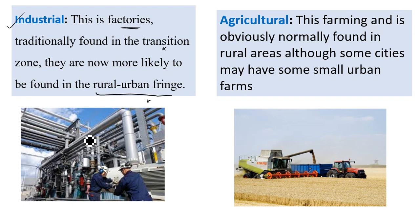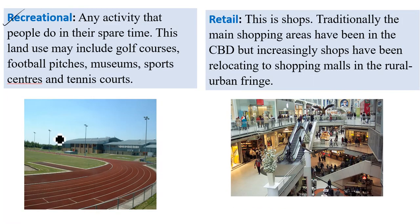Another function is agriculture — farming — which is normally found in rural areas, although some cities may have small urban farms. Another function is recreational activity — any activity that people do in their spare time. This land use may include golf courses, football pitches, museums, sport centers, and tennis courts.